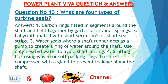Question number 13: What are four types of turbine seals? 1. Carbon rings fitted in segments around the shaft and held together by garter or retainer springs. 2. Labyrinth seals mated with shaft serrations or shaft seal strips. 3. Water seals where a shaft runner acts as a pump to create a ring of water around the shaft — use only treated water to avoid shaft pitting. 4. Stuffing box using woven or soft packing rings that are compressed with a gland to prevent leakage along the shaft.